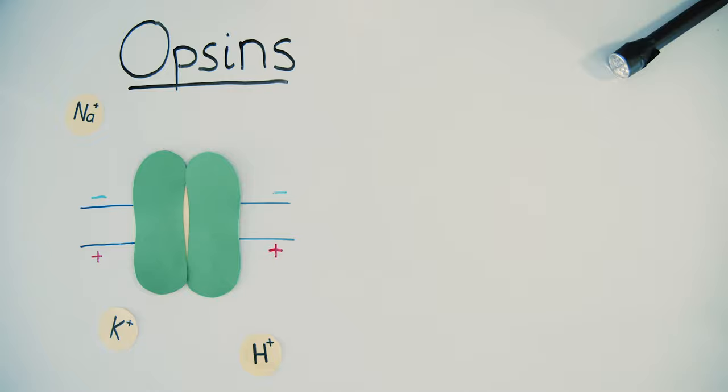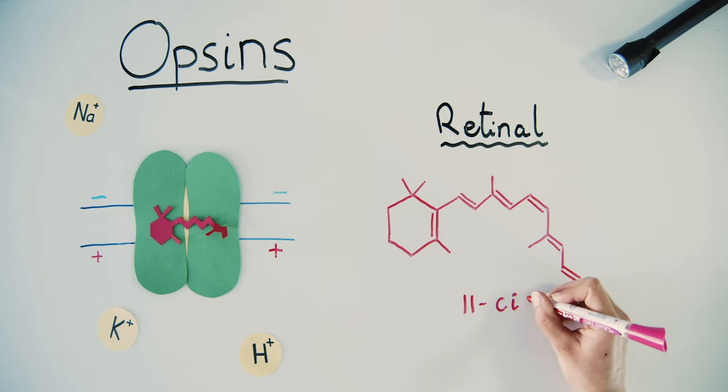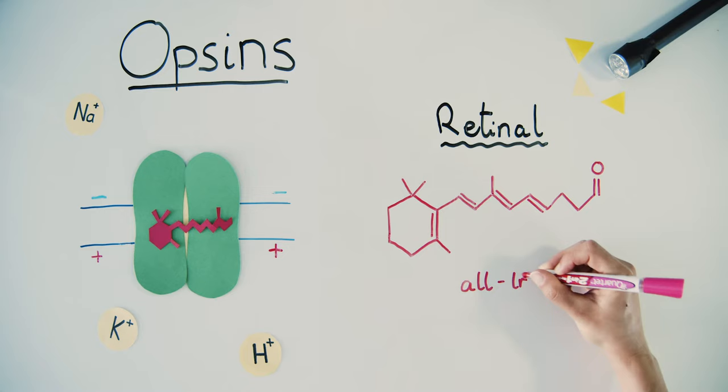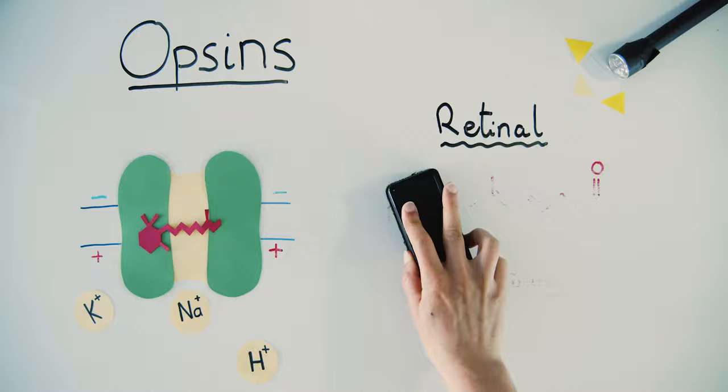Opsins are able to respond to light thanks to a light-sensing chromophore, like retinol. When exposed to the correct wavelength of light, retinol changes from 11-cis to all-trans and causes the opsin to activate and shuttle ions across the membrane.